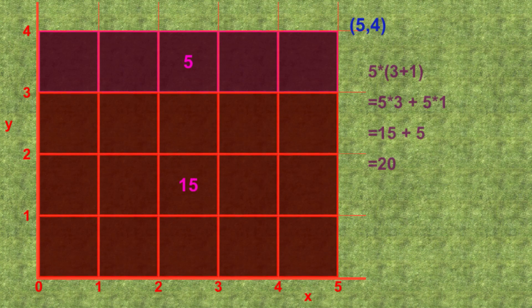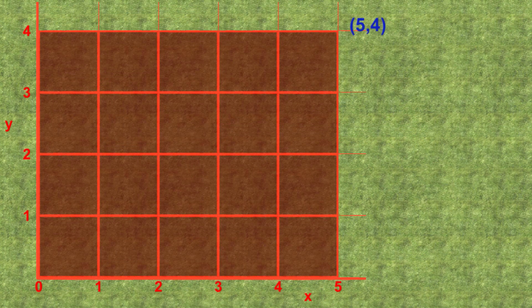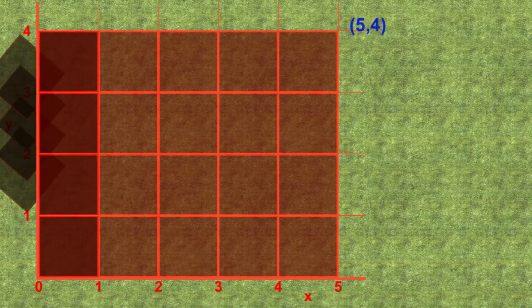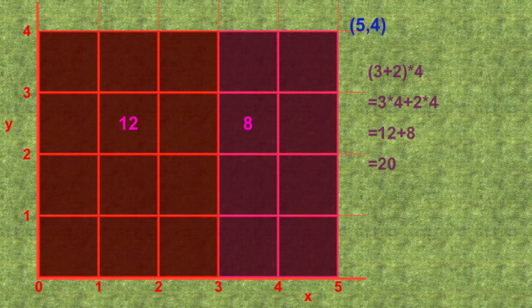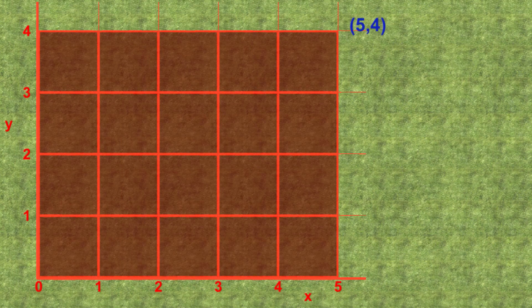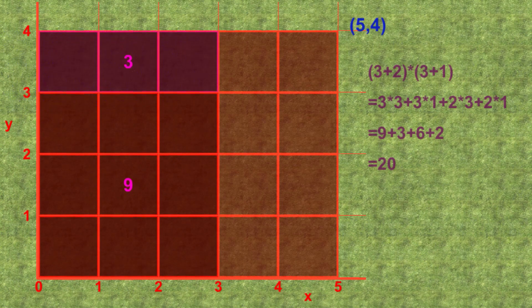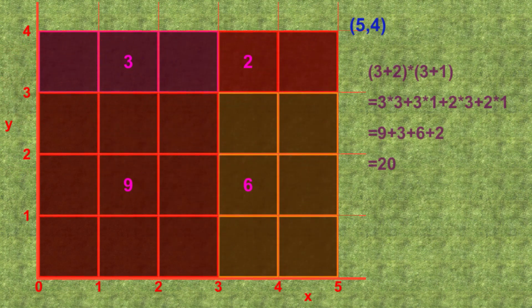Instead of splitting the columns, we could also split the rows, let's say into 3 plus 2 times 4. We now multiply the 4 into the brackets and add up to get 12 plus 8 equals 20. But we can also make it more interesting by simultaneously splitting both the rows and the columns by multiplying 3 plus 2 in brackets by 3 plus 1 in brackets. Both the 3 and the 2 now needs to be multiplied into the 3 plus 1 in brackets respectively, adding everything up thereafter. This gives us 9 plus 3 plus 6 plus 2.